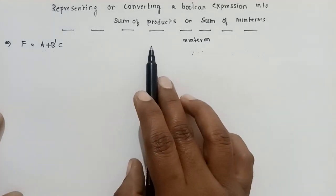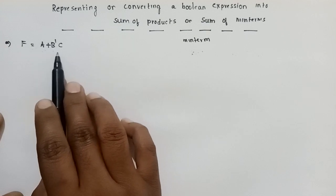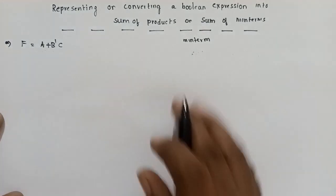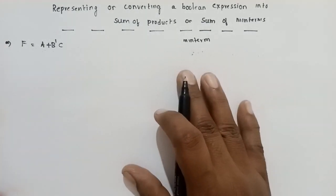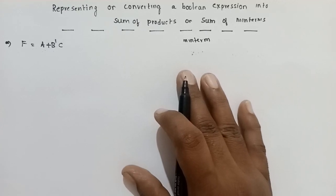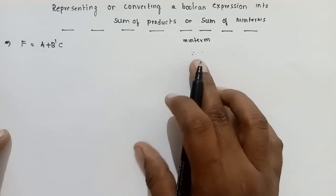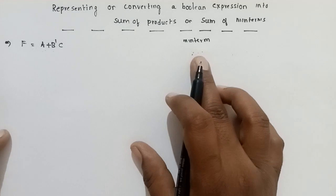I will show you some A plus B dash C. In this function, I will show you some of the products and some of the main terms will convert. In some of the products, I will show you some of the main terms.